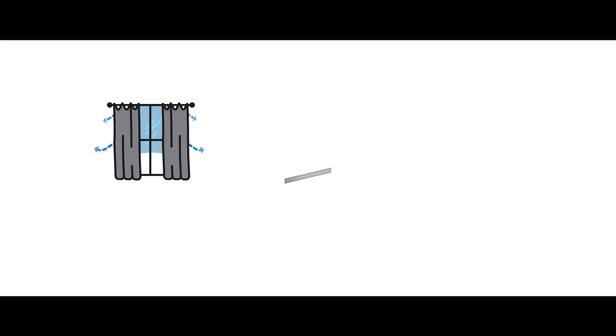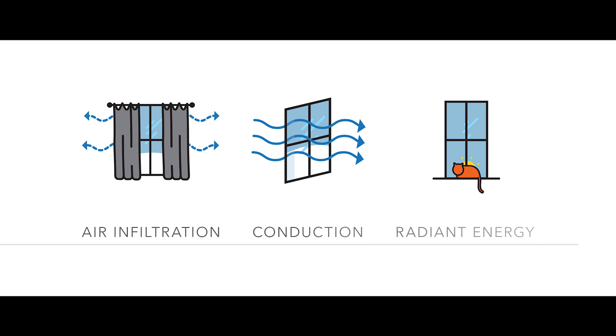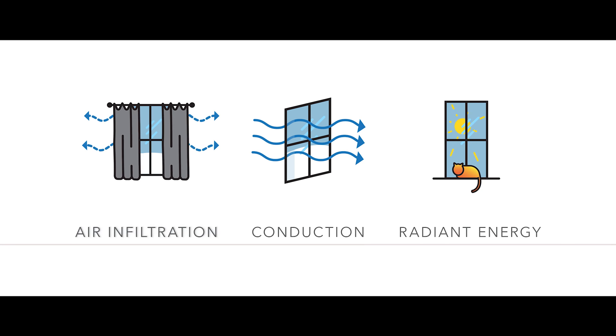Today we're going to talk about the energy efficiency of windows and doors. Inefficient windows waste energy in three main ways: the first is infiltration, conduction, and then radiant energy.